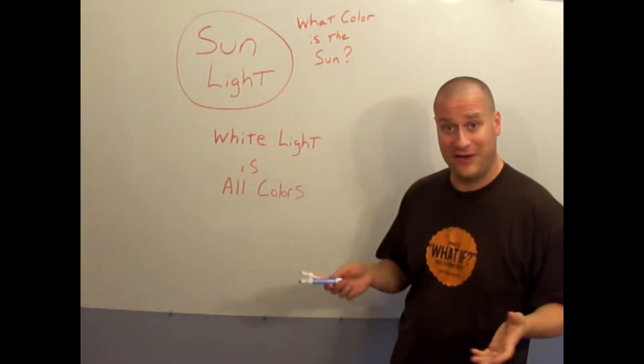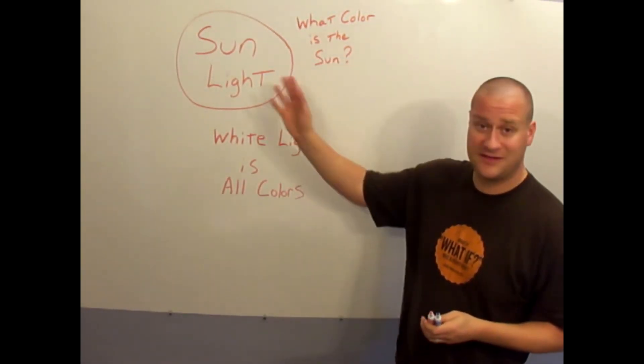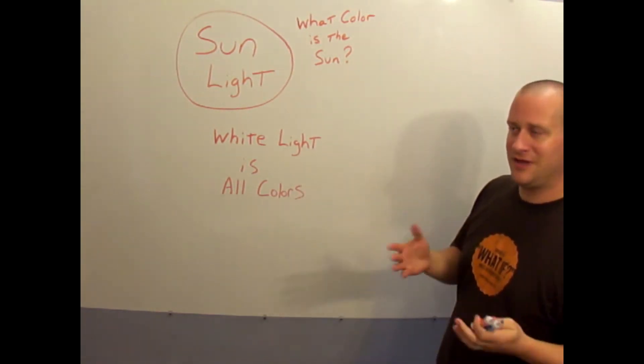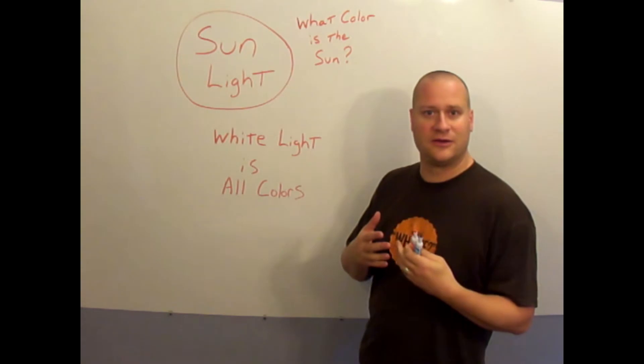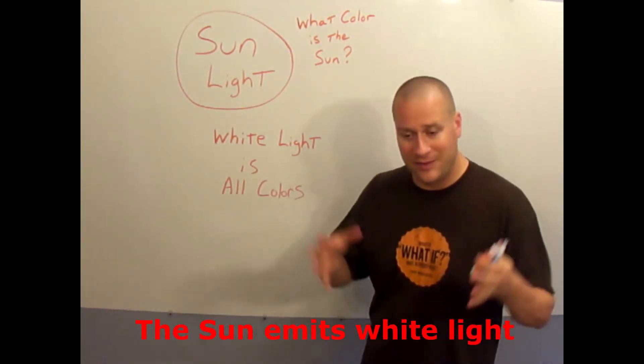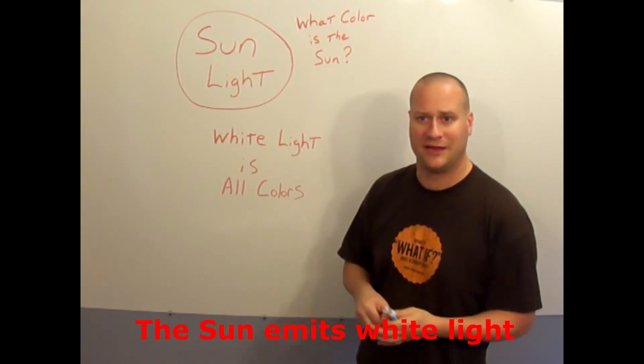We now come to my favorite part about discussing the sun, and that's sunlight. What color is the sun? The sun is emitting white light, and white light is basically all the colors of the rainbow combined together to make white light. It's bright, it's clear, it's crisp.